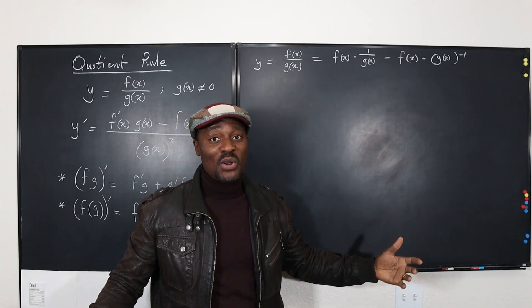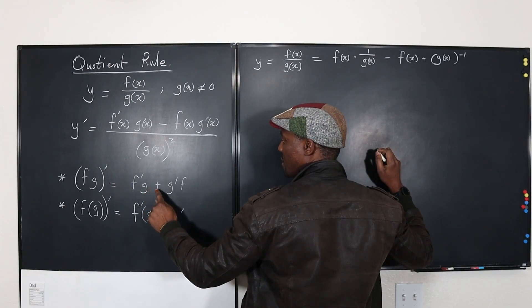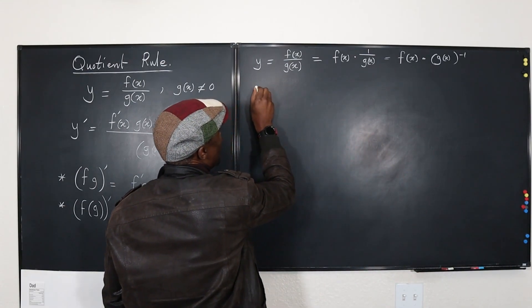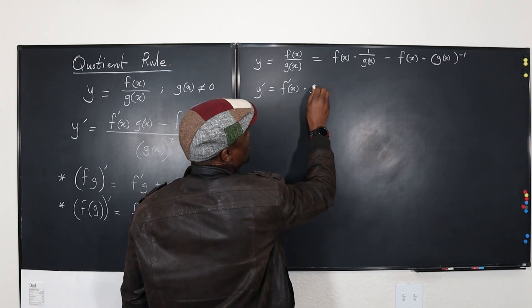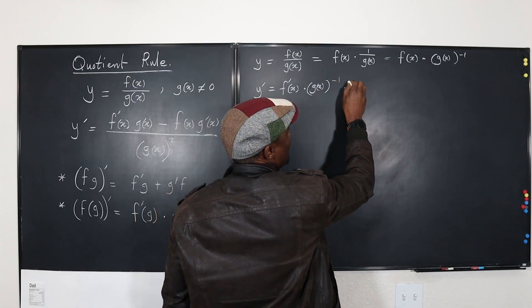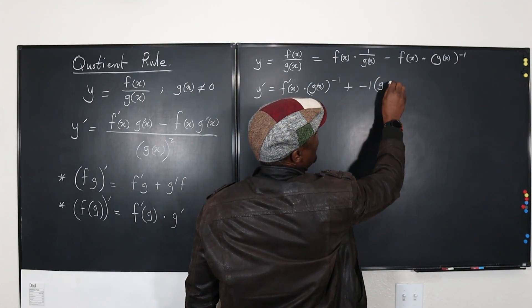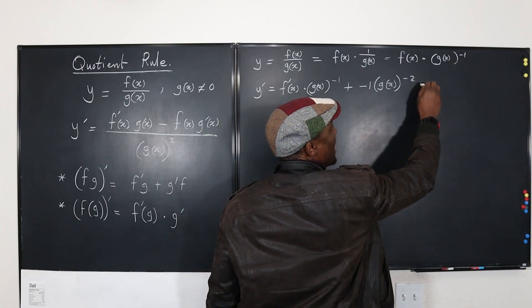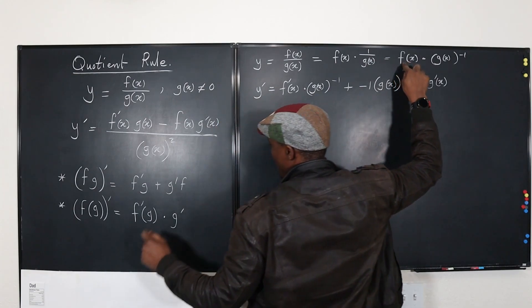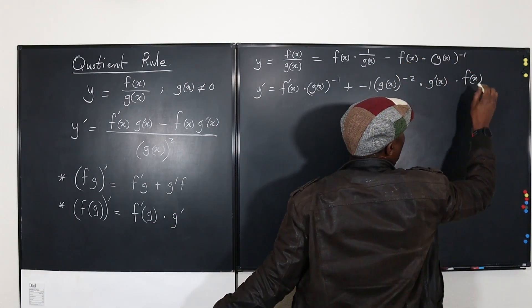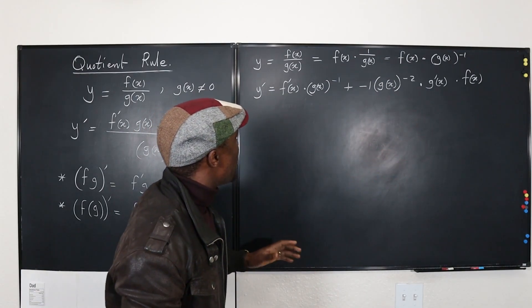So what we have now, we just apply the product rule and the chain rule along the way. This is a product, so we apply the product rule: derivative of the first multiplied by the second, plus derivative of the second multiplied by the first. So y prime equals f prime of x multiplied by g of x raised to the power negative one, plus the derivative of the second — which is negative one multiplied by g of x raised to the power negative two — times the derivative of what's inside, g prime of x, and remember that times f of x. So we have applied the product rule, and along the way applied the chain rule.